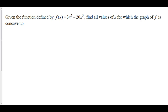Given the function f(x) = 3x⁵ - 20x³, let's find all values of x for which the graph of f is concave up. f is concave up when the second derivative, f double prime, is positive.